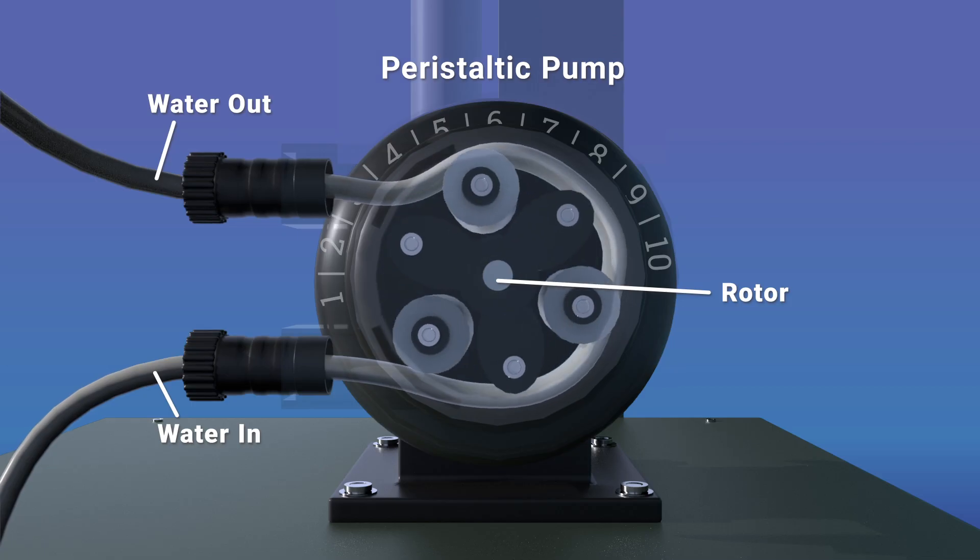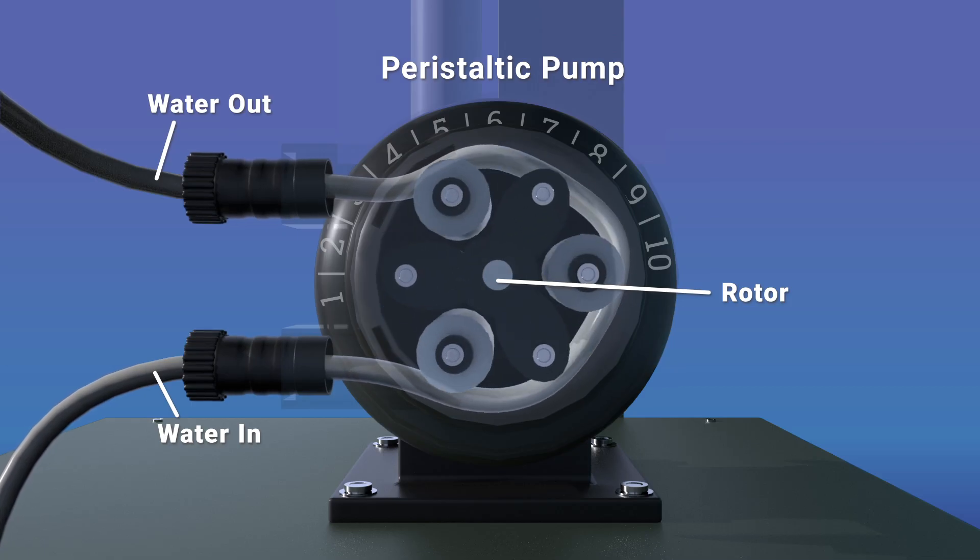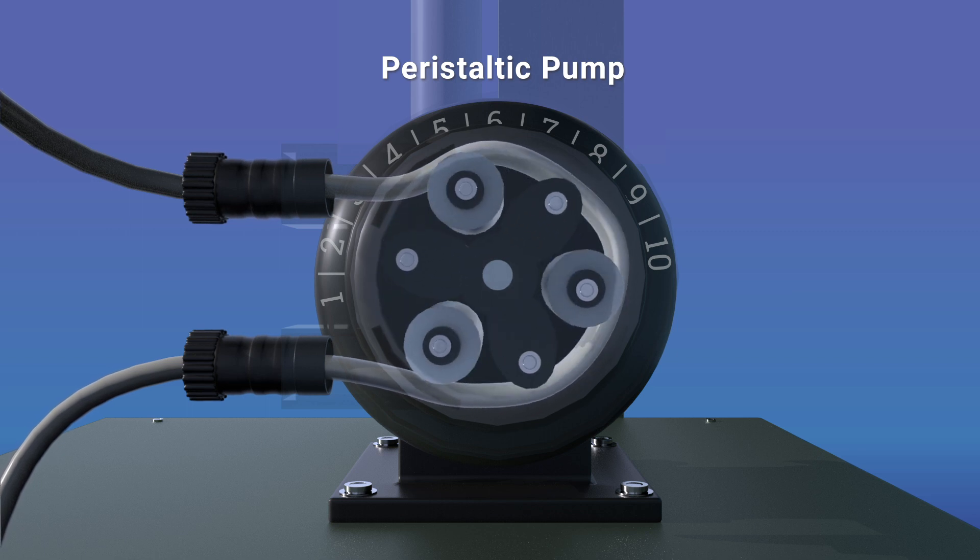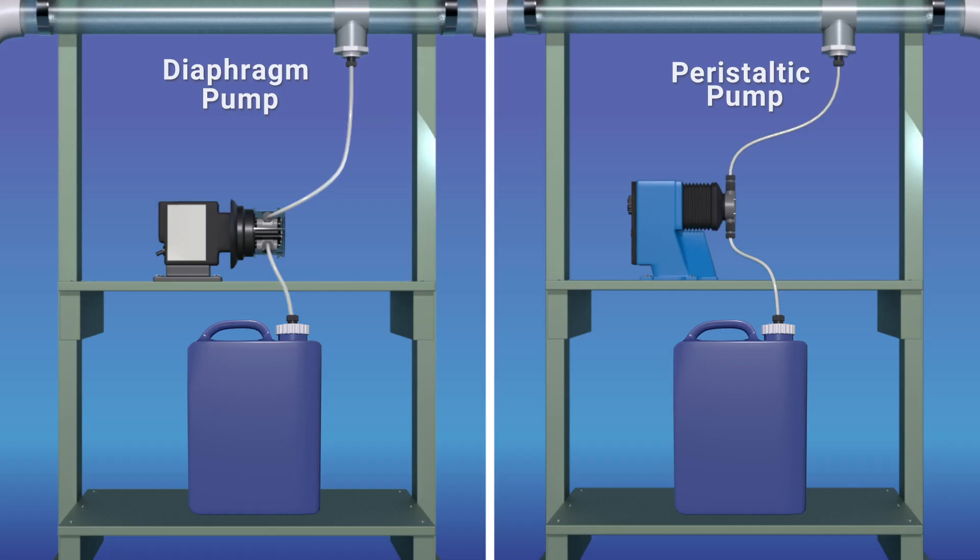Inside the peristaltic pump, the rotor compresses and decompresses the hose, creating a strong vacuum that draws chemicals out and into the water. It's important to take good care of the pump.